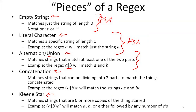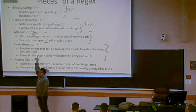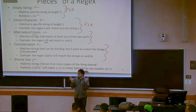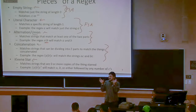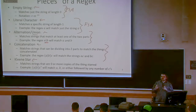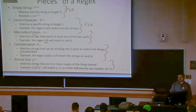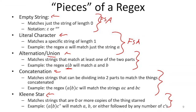I'll do the same thing for concatenation. If I have two finite state automata each computing some language, I can find a third finite state automaton that computes the concatenation of those two languages. And the same applies to Kleene star — if I have a finite state automaton for some language, I can create one for the Kleene star of that language.